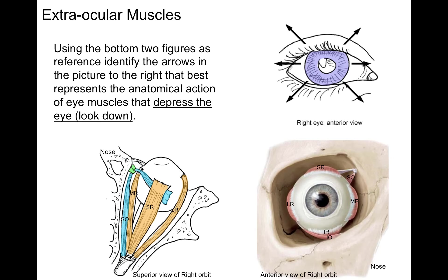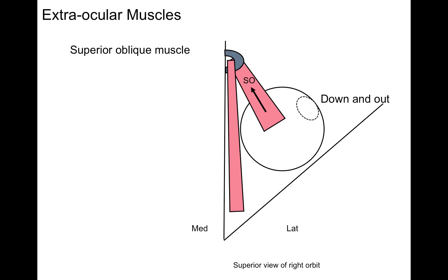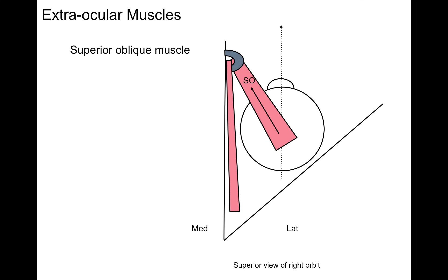Using the bottom two figures as reference, identify the arrows in the picture that best represents the anatomical action of the eye muscles that depress the eye — to look down in that axis. There are our inferior rectus and superior oblique. In this superior view of the right orbit, the superior oblique courses through that gray pulley called the trochlea and attaches to the very top and back of the eyeball. When the superior oblique muscle contracts, it causes the eye to look down and out.